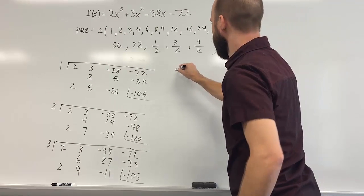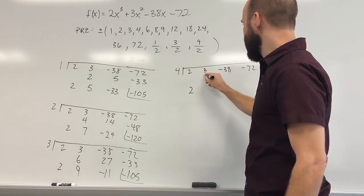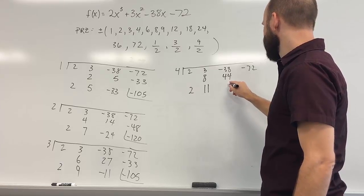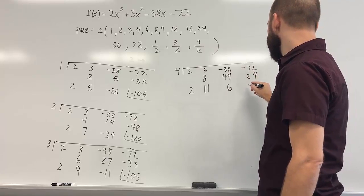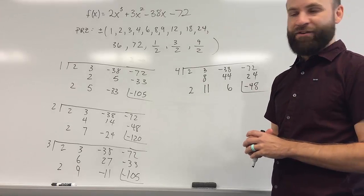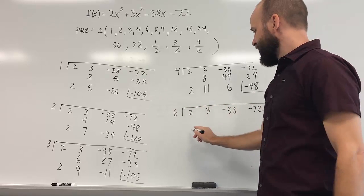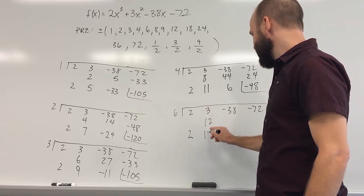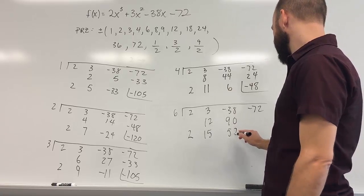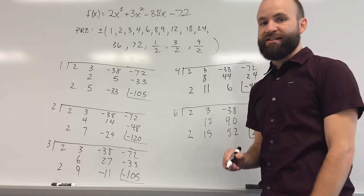Let's try 4. Synthetic division: 2; 2×4=8; 3+8=11; 11×4=44; −38+44=6; 6×4=24; −72+24=−48. So f of 4 is −48, also not a zero — another negative value. Let's try 6. Synthetic division: 2; 2×6=12; 3+12=15; 15×6=90; −38+90=52; 52×6=312; −72+312=240. So f of 6 is positive 240. 6 is also not a zero, but now I've got something.